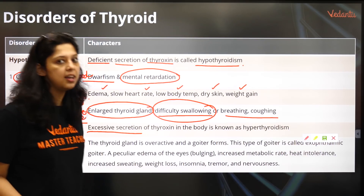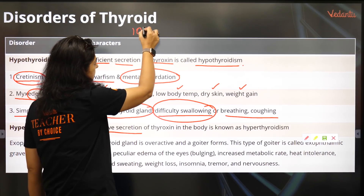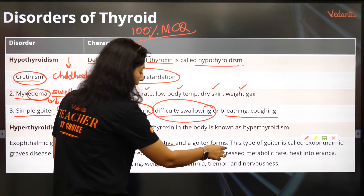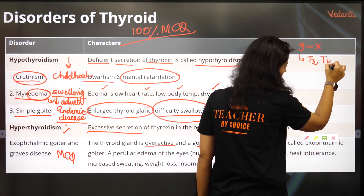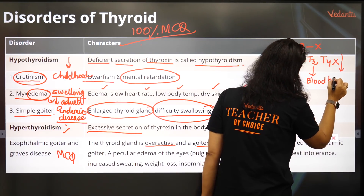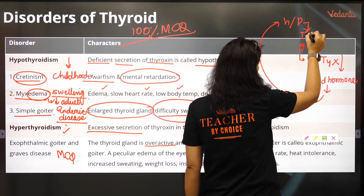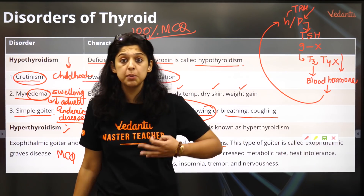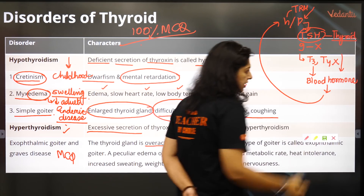Exophthalmic goiter and Graves disease are very important for MCQs. The thyroid gland is overactive — it's hyper. In this condition there is iodine deficiency, so due to iodine deficiency T3 and T4 are not produced. Whenever T3 and T4 levels are low in the blood, this blood goes to the hypothalamus and pituitary, which secretes thyroid releasing hormone and then thyroid stimulating hormone. So the thyroid is continuously stimulated, but because there is no iodine, the hormone cannot be made — this vicious cycle repeats.